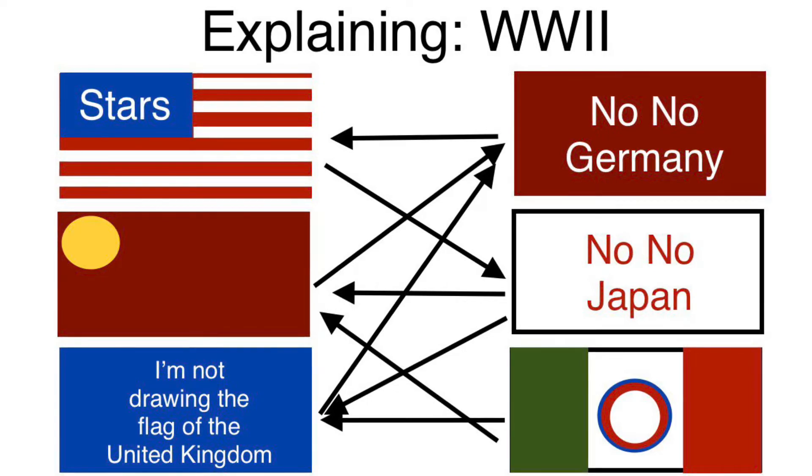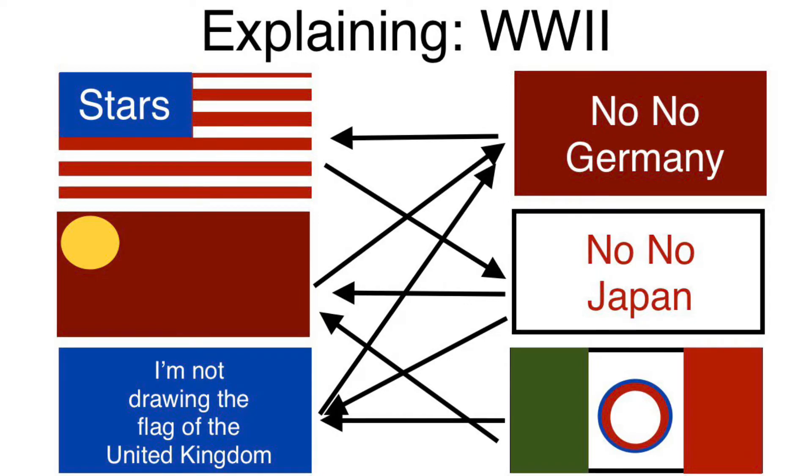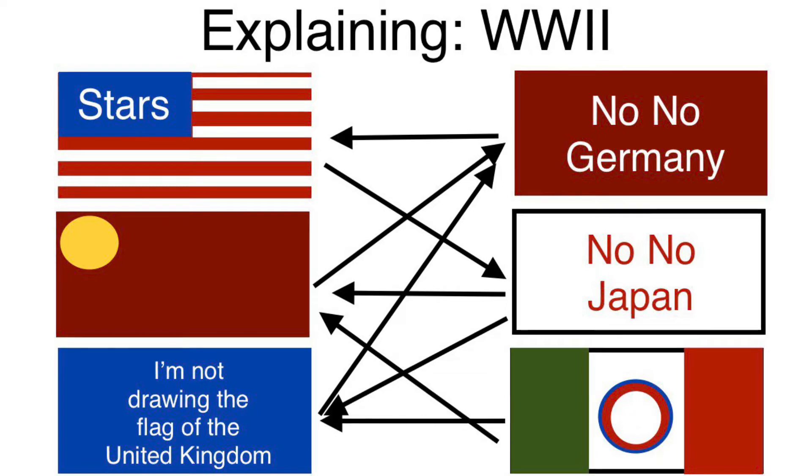However, in 1940, the Germans would begin to make quick advancements, such as taking over Denmark in only six hours, taking over Norway, and taking over Belgium, the Netherlands, and taking out France.